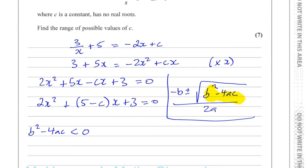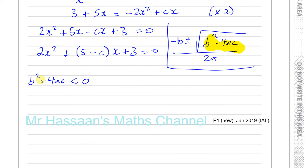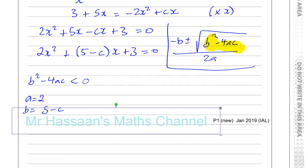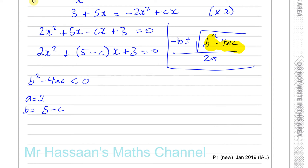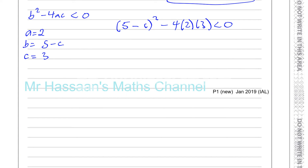This is the discriminant taken from the quadratic formula. In our quadratic, a is the coefficient of x squared, which is 2. b is the coefficient of x, which is (5 minus c). And the c in the formula — different from the c in our equation — is 3. So b squared minus 4ac gives (5 minus c) squared minus 4 times 2 times 3 less than 0. Solving this inequality will give the range of values of c for which the original equation has no solution.